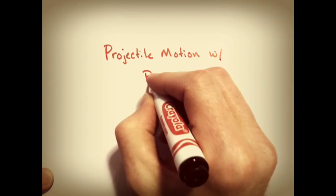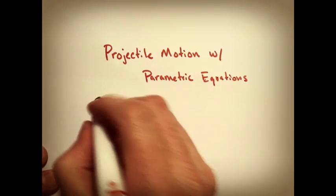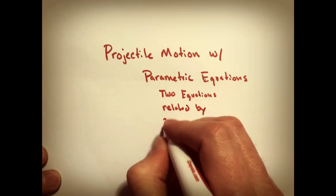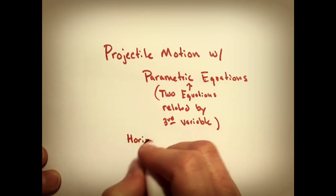Here we go, last section, chapter 8, projectile motion using parametric equations. So we're going to try to express two equations using a third variable, which is time.